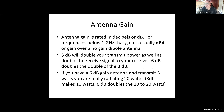Antenna gain is rated in decibels or dB. For frequencies below one gigahertz, antennas are expressed in dBd, which is dB over a dipole antenna. When you get above one gigahertz, you'll see dBi — dB over an isotropic radiator, a theoretically perfect antenna that doesn't exist. That's a difference of about 2.1 dB: a dBd antenna is 2.1 dB lower than an isotropic.